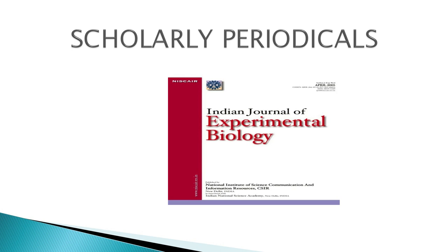Scholarly periodicals are published by learned societies, R&D organizations, universities and some reputed commercial publishers. These are better known as journals which generally publish research findings and are peer reviewed. Because of the rigorous evaluation process, these publications are also referred to as refereed or peer-reviewed journals. Each article in such journals becomes a permanent record of that subject. The purpose of a scholarly periodical is to report original and significant research in a particular discipline. Articles are written by researchers, professionals or experts in the field. The articles are mostly technical in nature and cannot be understood by readers who lack subject background. Normally these journals do not carry any advertisement. An example is the Indian Journal of Experimental Biology.